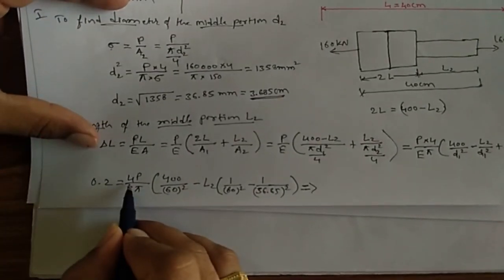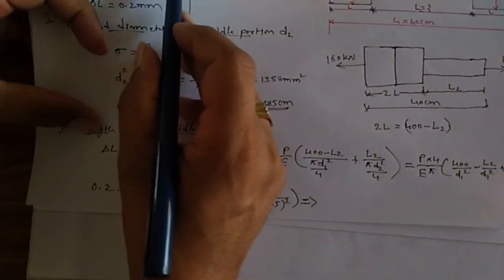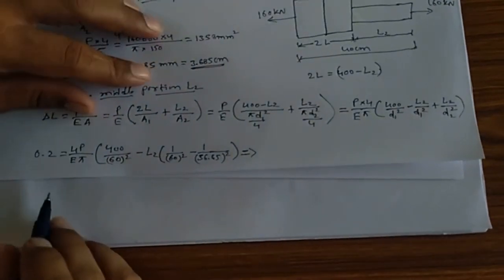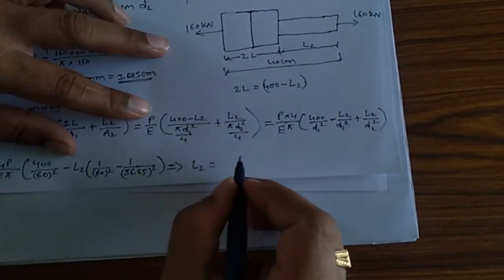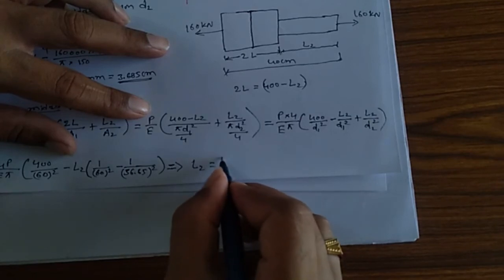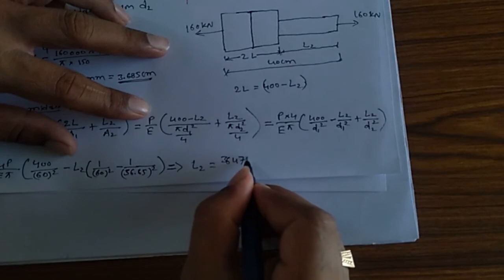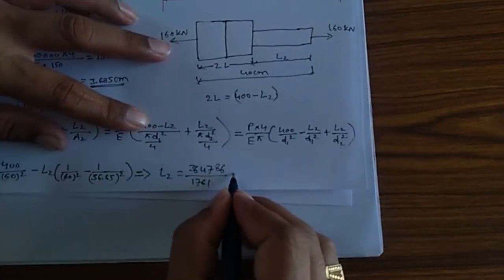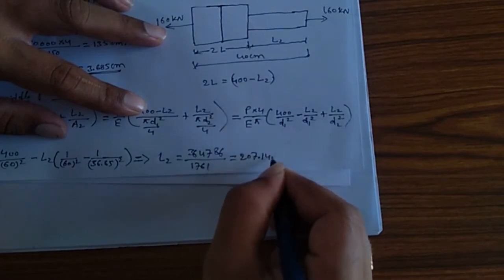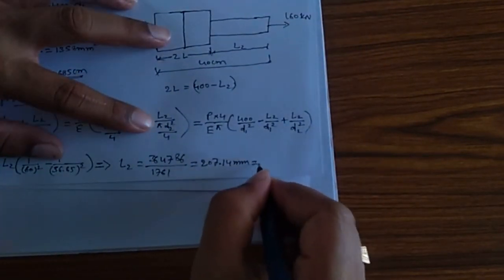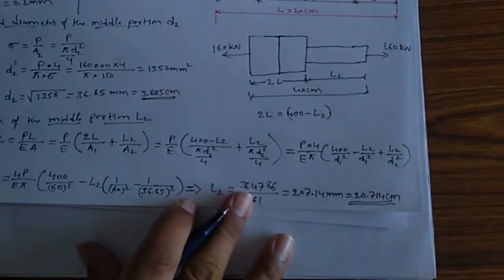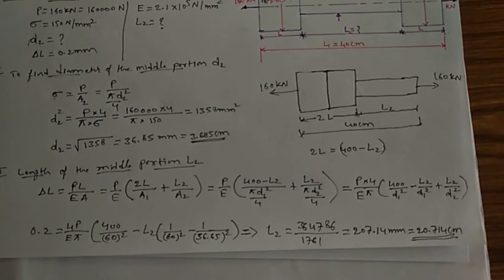Substituting all values: delta L = 0.2 mm, P = 160,000 N, E = 2.1 × 10⁵. After simplification, L2 equals 0.2 times some factor, giving 364.786 divided by 17.61, which equals 207.14 mm, or 20.714 cm. This is the answer. If you find this helpful, please like and share with your friends. Thanks for watching.